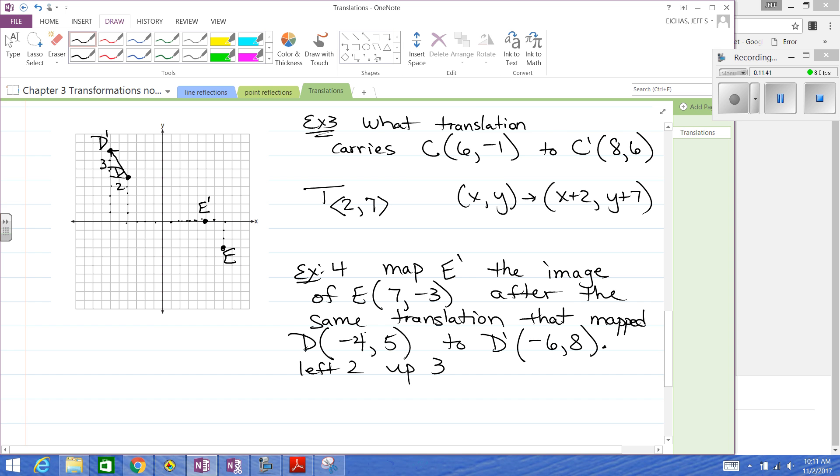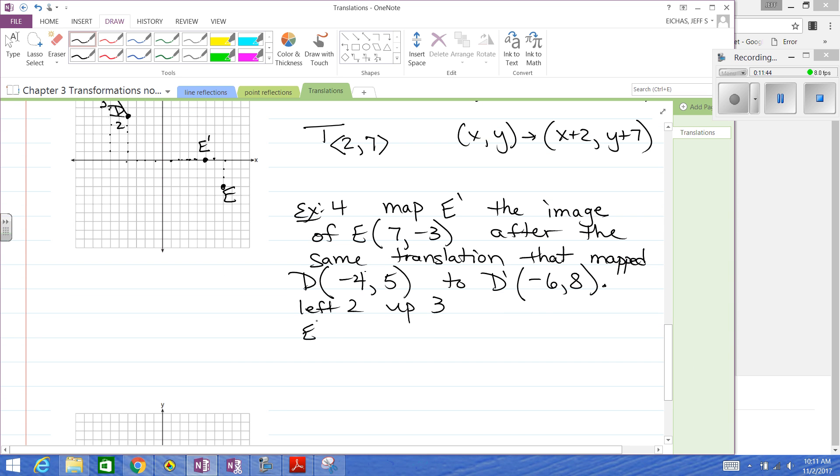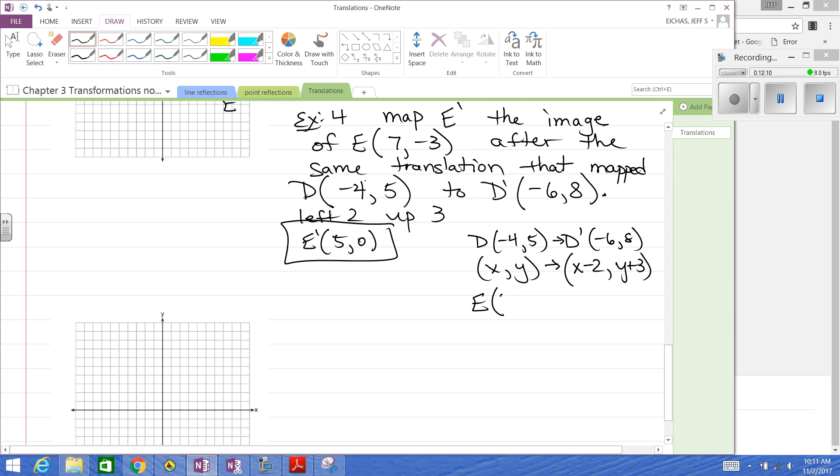And then that would be 1, 2, 3, 4, 5. So E prime would be at 5, 0. So you could do that math with a graph. We could have done it algebraically. D to D prime was using the rule. Looks like we subtracted 2 from x and added 3 to y. So if we take E, 7, negative 3, and apply the same rule, subtract 2 from x, you get 5. Add 3 to y, you'll get 0. So there's a couple ways to do it. Graphing or algebraic. And be ready for any of those types of variations.